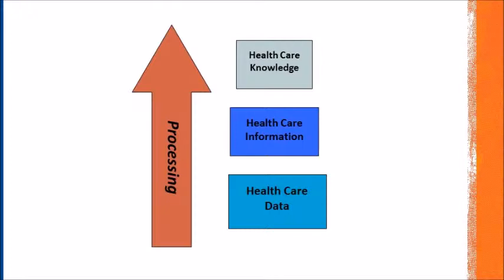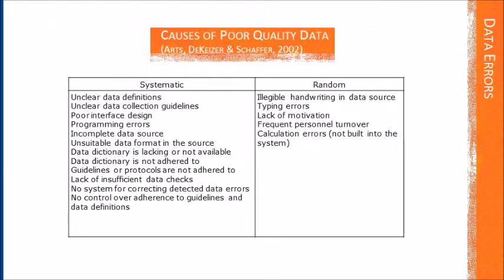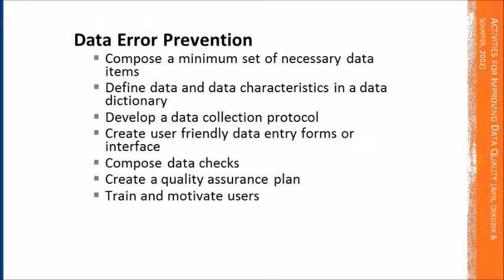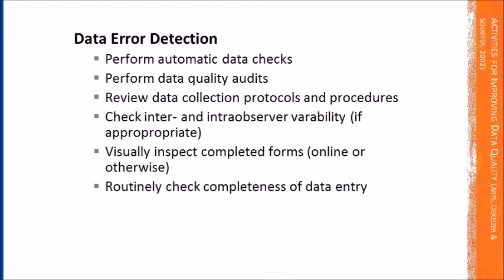This video will model the process of operationalizing the data and information in your upcoming project. Also, give careful consideration to tables 2.1 and table 2.2. Table 2.1 addresses poor health quality data and supports your summary of the problem your project is addressing. The activities for improving data quality in table 2.2 can support your possible solution section.